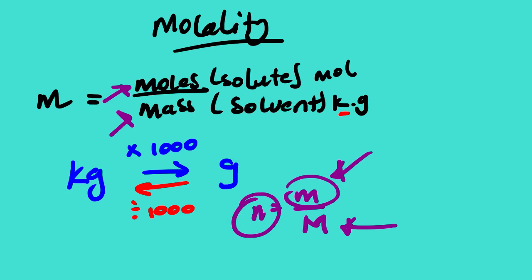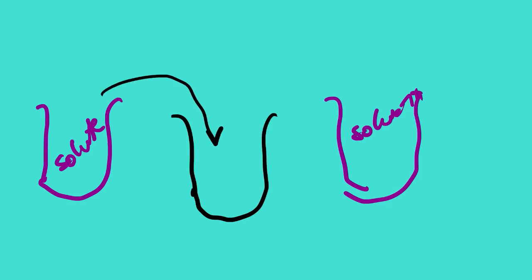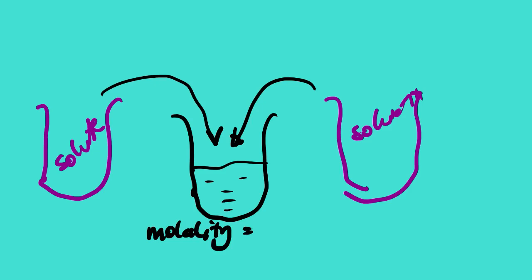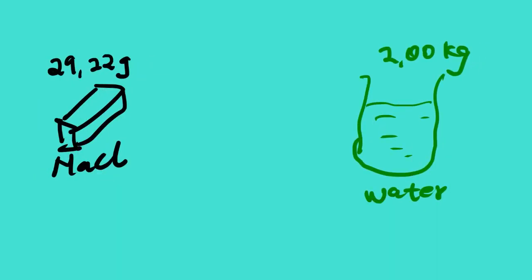To explain the concept generally: suppose we have a solute and a solvent, and we mix the two inside a container. From there, we calculate the molality of the new solution using the moles of the solute divided by the mass of the solvent.